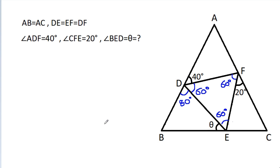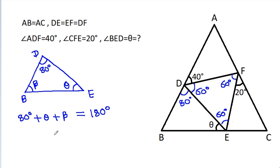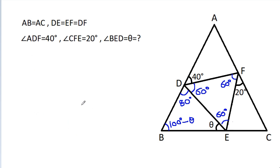In triangle BDE, this angle is 80 degrees, this angle is theta, and suppose the remaining angle is beta. Then 80 degrees plus theta plus beta equals 180 degrees. So beta equals 180 minus 80, which is 100 degrees, minus theta. So this angle is 100 degrees minus theta.